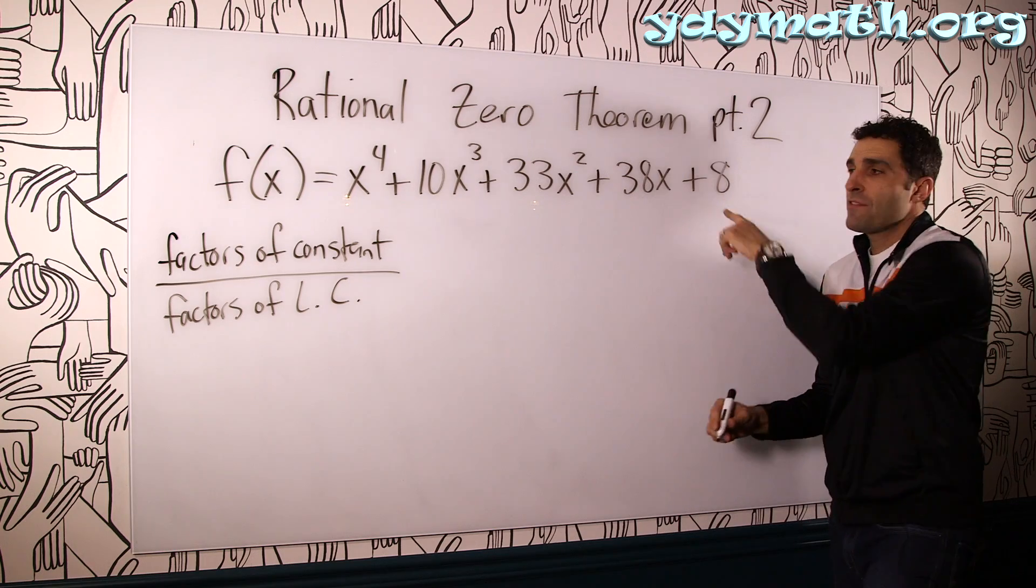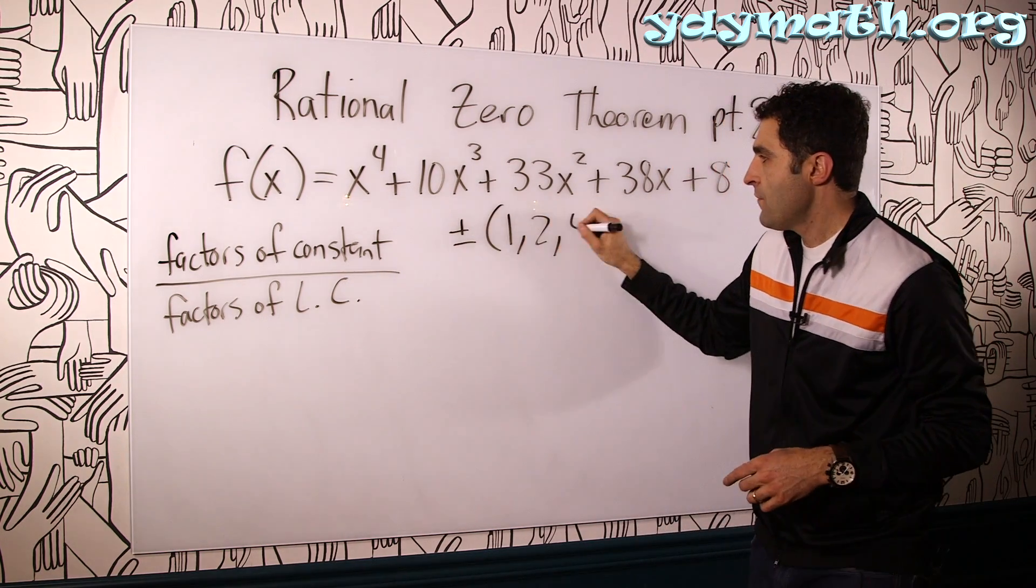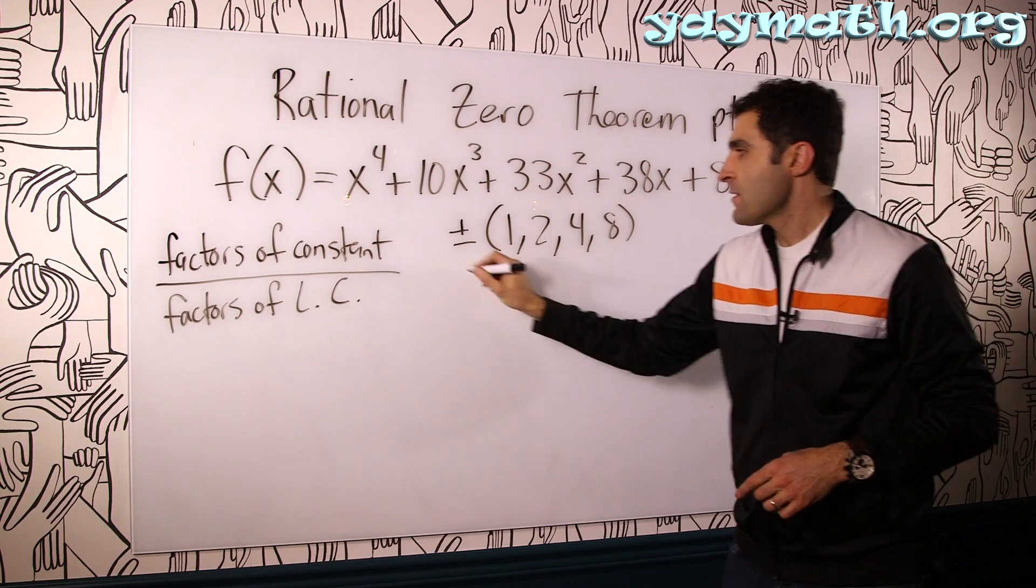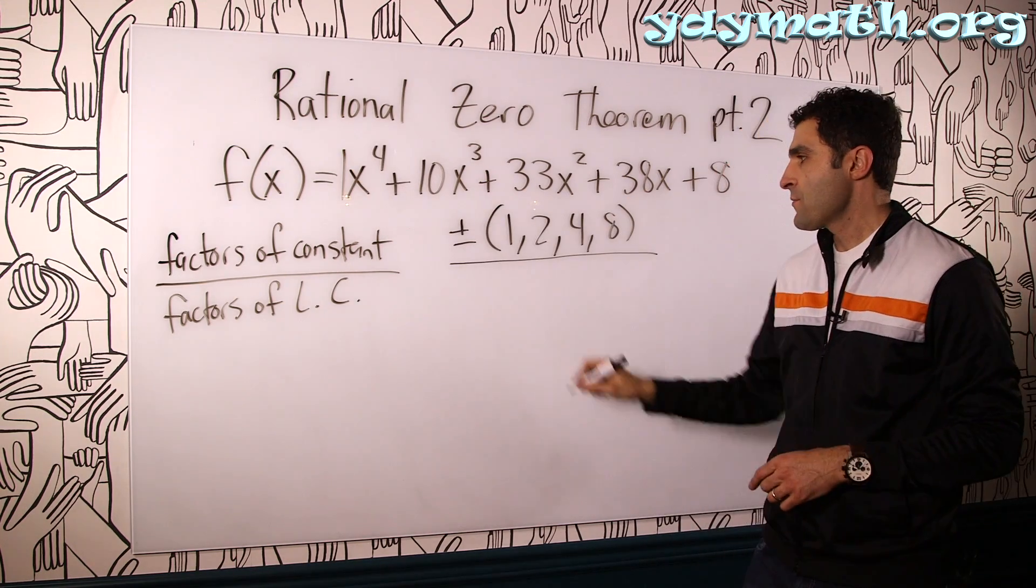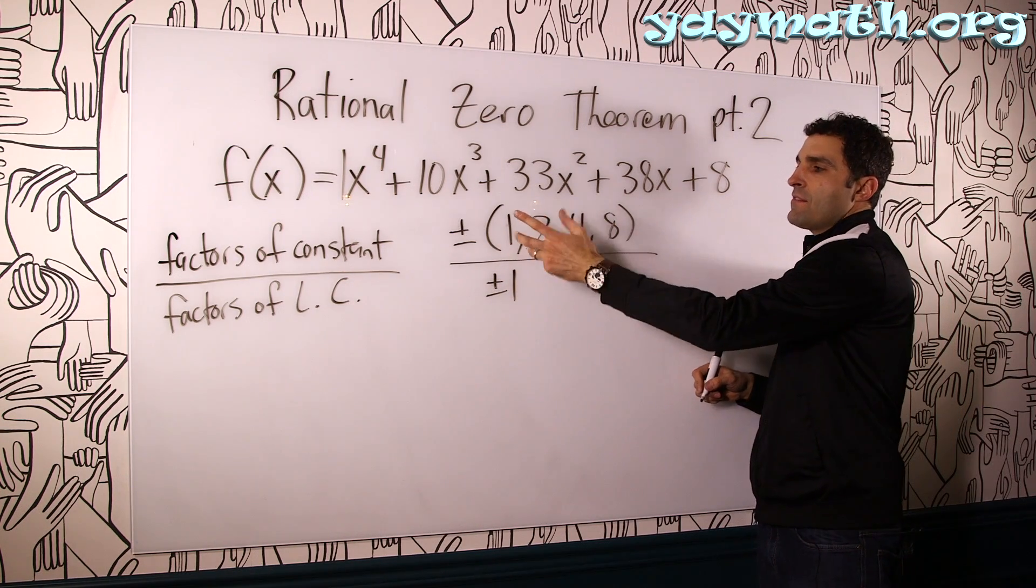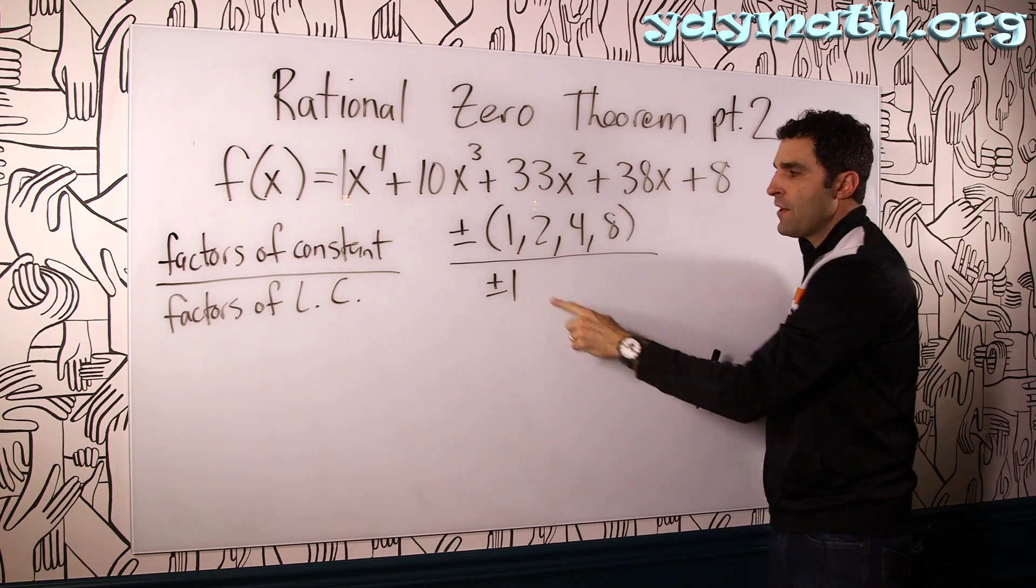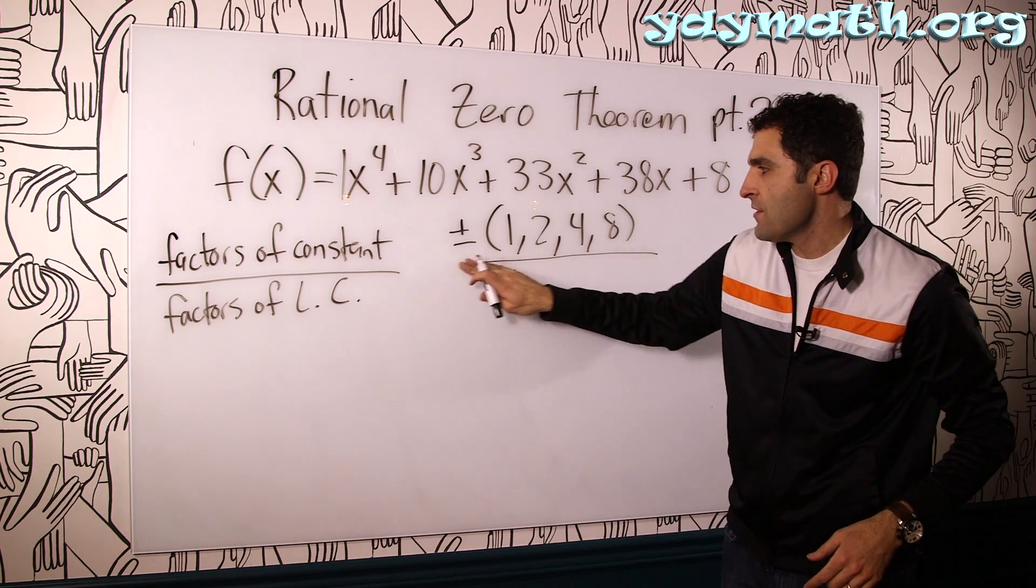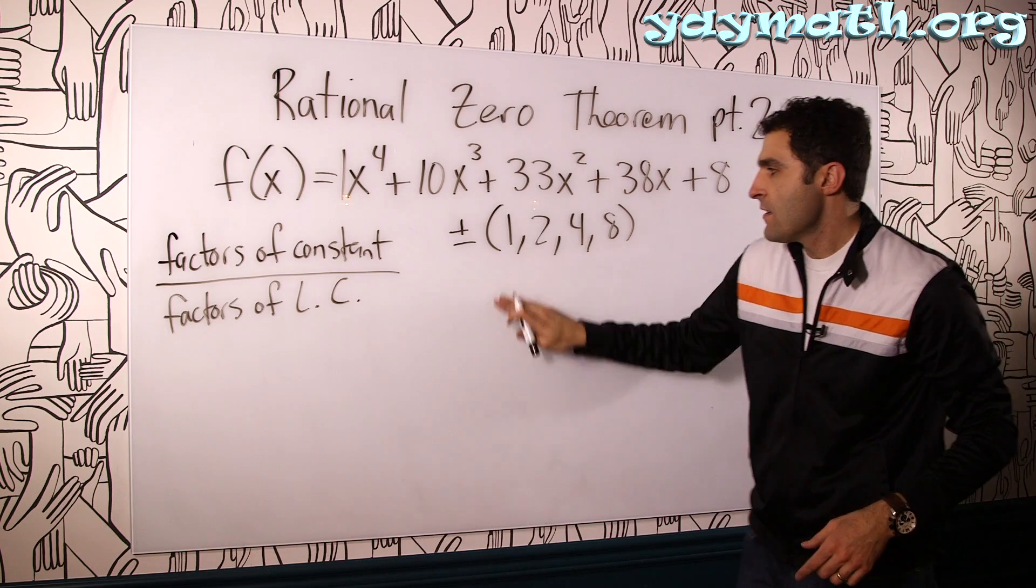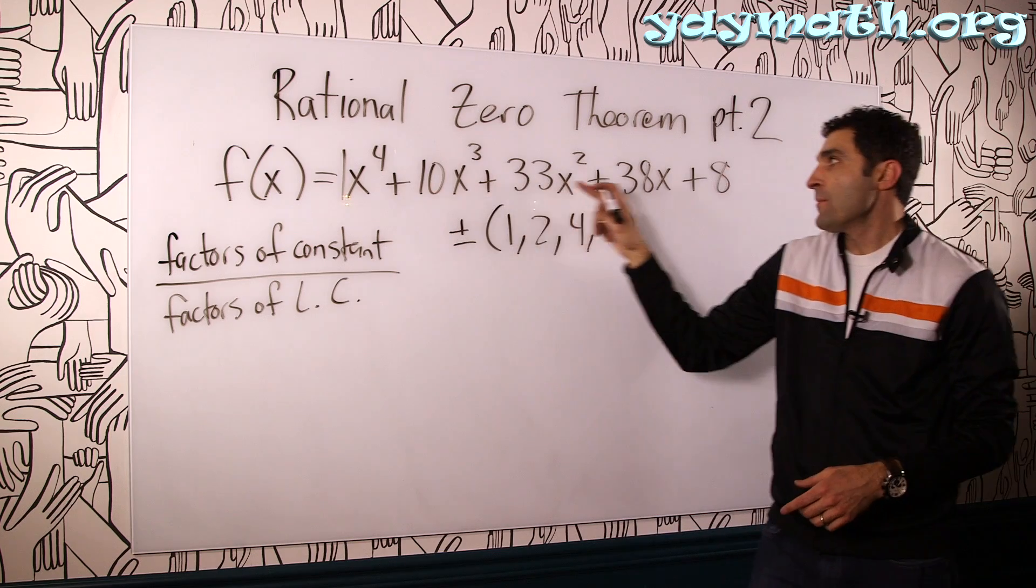Let's do it. Factors of the constant, the factors of eight are plus or minus one, two, four, and eight divided by factors of leading coefficient. Leading coefficient here is one plus or minus one. So all four of these, or eight technically, plus or minus one and so forth, divided by one is pretty much these four numbers. Okay? So that is eight numbers that are potential solutions for this polynomial.